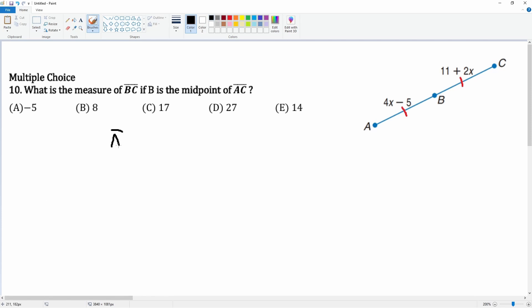We know that line segment AB is going to be congruent to line segment BC. Therefore, the measurement of AB has to be equal to the measurement of BC. Let's plug in the values.